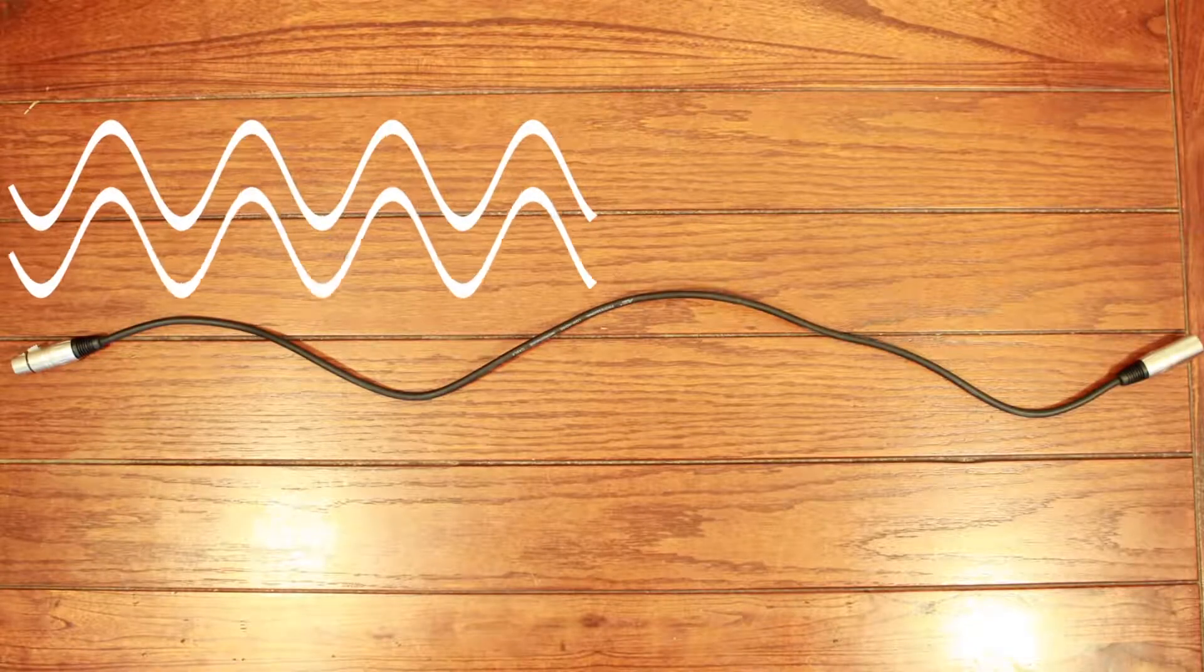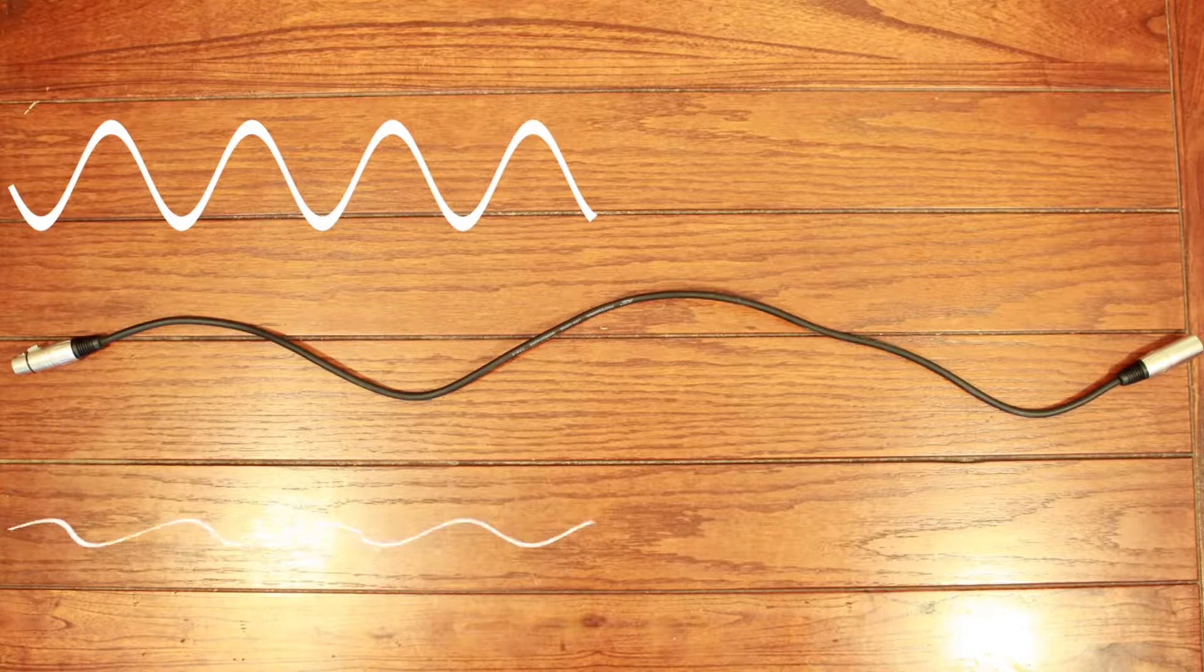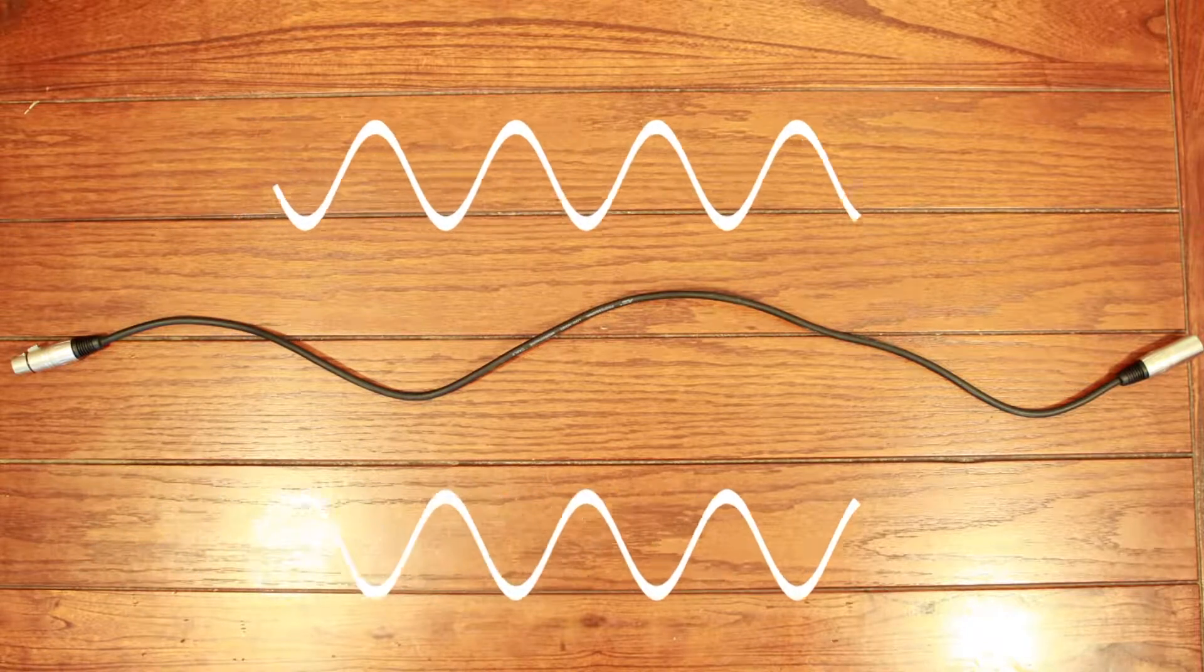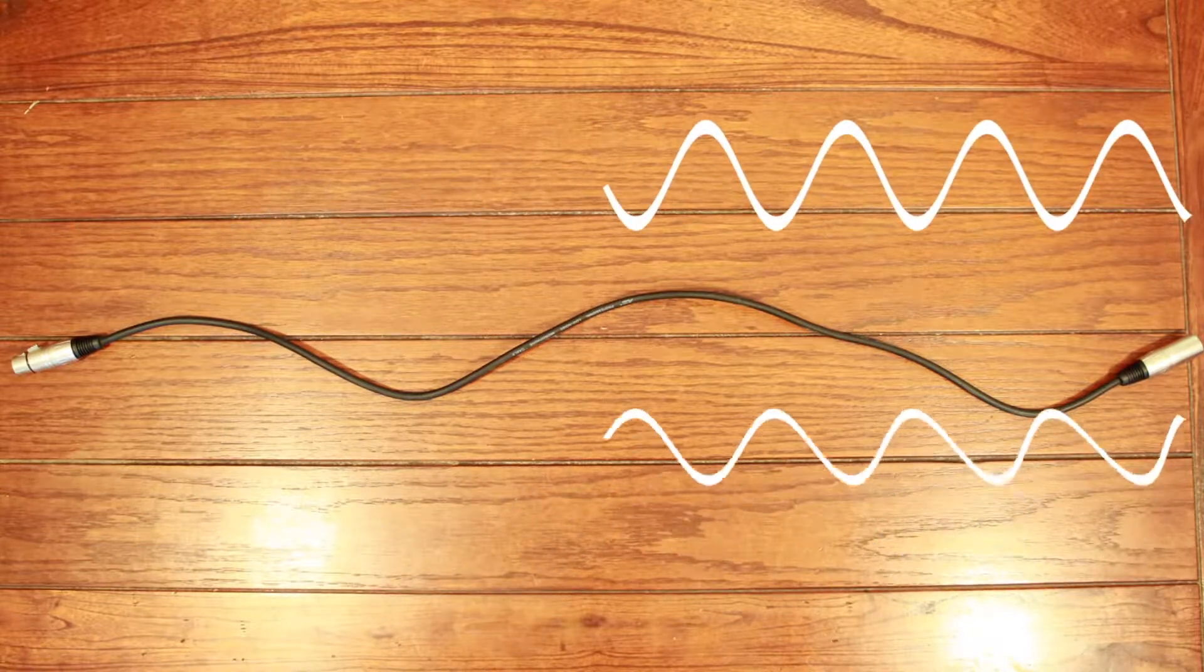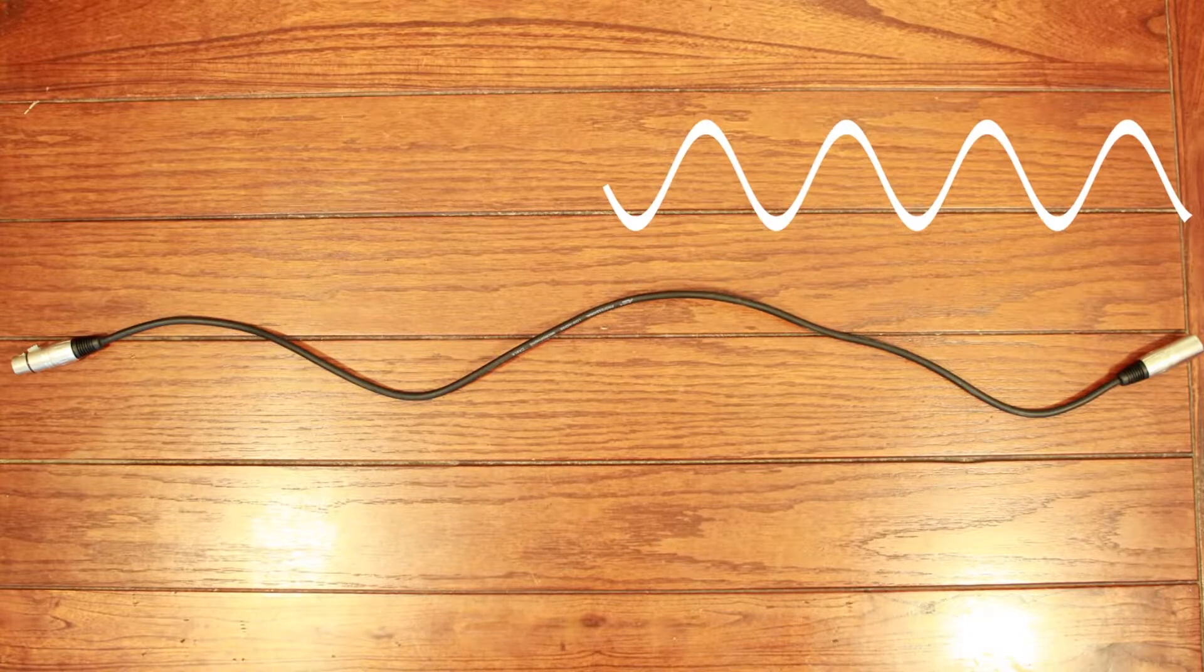When a cable is balanced, you split an audio signal in two, invert one of the signals, send them both along separate wires in the cable, and revert the inverted signal back to normal. I'll go into more detail in a future video, but this effectively cancels out the noise from any interference along the length of the cable.